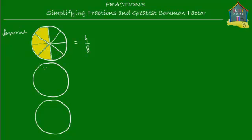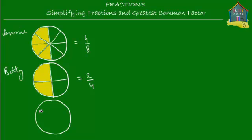Annie gets 4 eighths of this pizza, which means she gets four out of the eight slices. Then what I do with the second pizza is I cut it up into four slices, and then I give two fourths — two slices out of the four slices — to Betty. So Betty gets two out of four slices of the second pizza. Then I take the third pizza, cut it into two slices, and give one of the two slices to Charlie. So Charlie gets one out of the two slices of the third pizza.